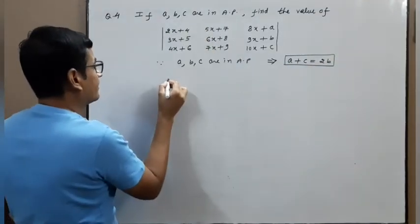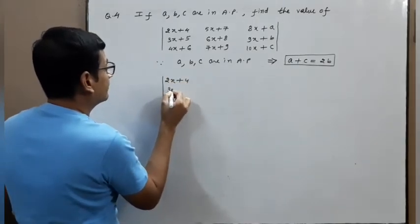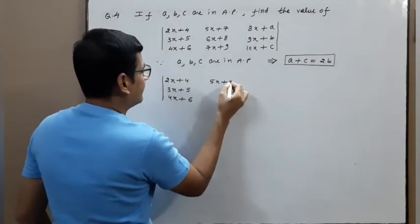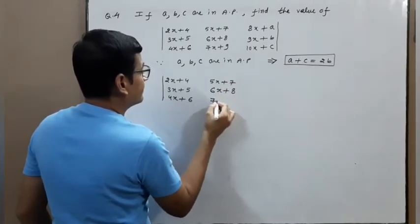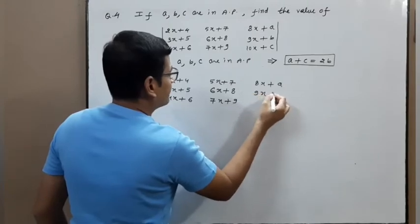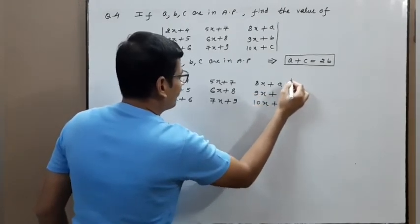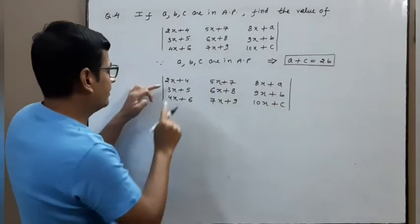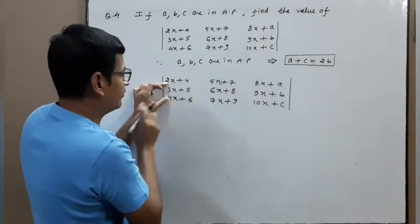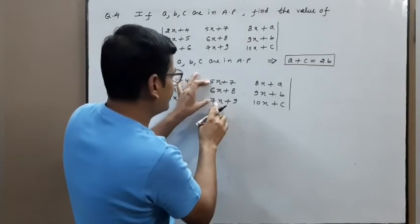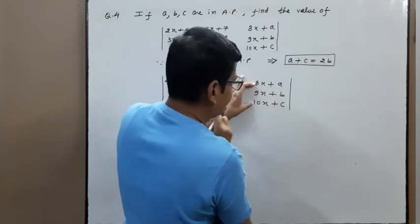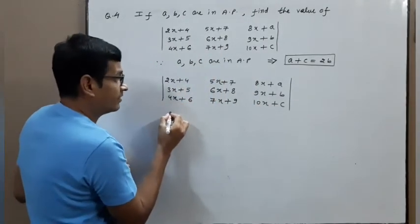Write out the determinant: entries are 2x+4, 3x+5, 4x+6 in row 1; 5x+7, 6x+8, 7x+9 in row 2; 8x+a, 9x+b, 10x+c in row 3. There is symmetry: (2x+4)+(4x+6) = 6x+10 = 2(3x+5); and (5x+7)+(7x+9) = 12x+16 = 2(6x+8). So the AP property applies row-wise.